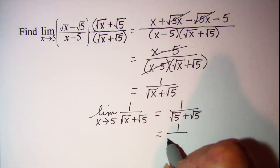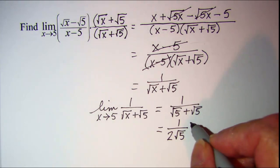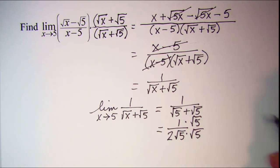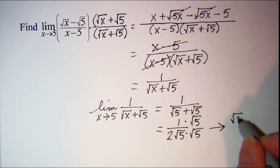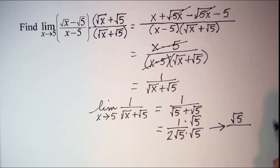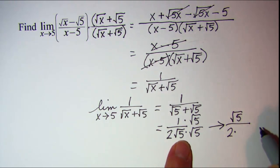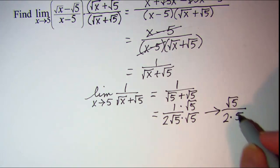Now root 5 plus root 5 is 2 root 5. And if we rationalize the denominator here, multiply top and bottom by root 5, we have root 5 divided by 2 times root 5 times root 5 is just 5. This simplifies then to root 5 over 10.